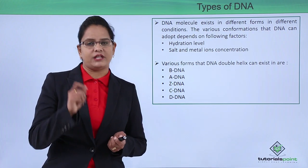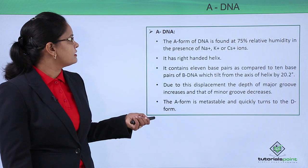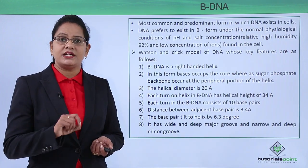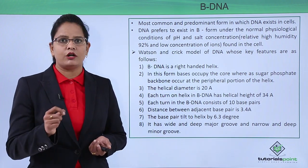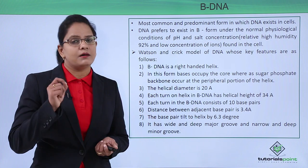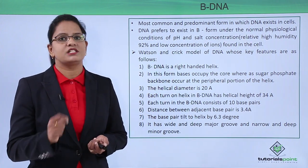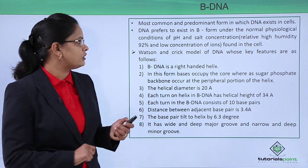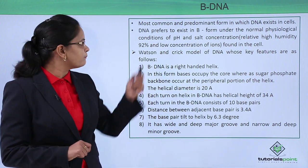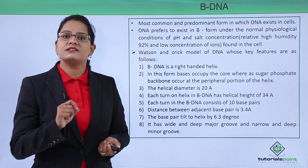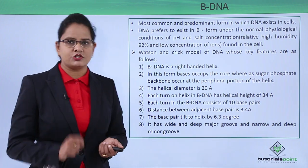First is B-DNA. B-DNA is the most common and predominant form of DNA. The Watson and Crick model we discussed is a B-DNA. It is found under physiological conditions present inside the cell — specifically at 92% relative humidity and very low concentration of ions.